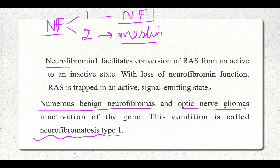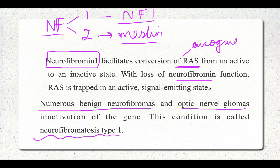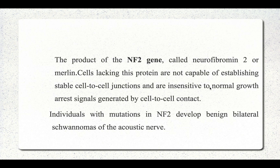The molecular basis of neurofibromin 1: it acts on RAS, the oncogene discussed in the previous video. Neurofibromin 1 facilitates the conversion of RAS from its active to inactive state. When neurofibromin is lost, RAS remains in the active state, and since RAS is an oncogene, this leads to carcinogenesis.